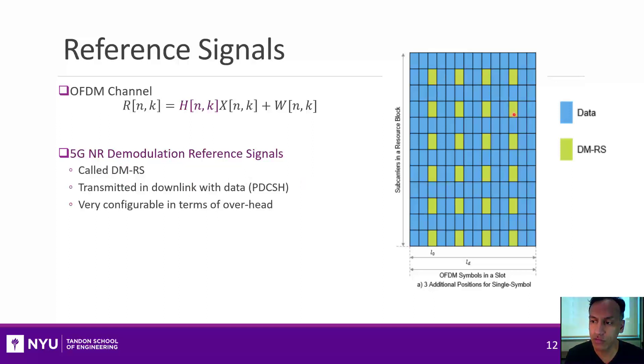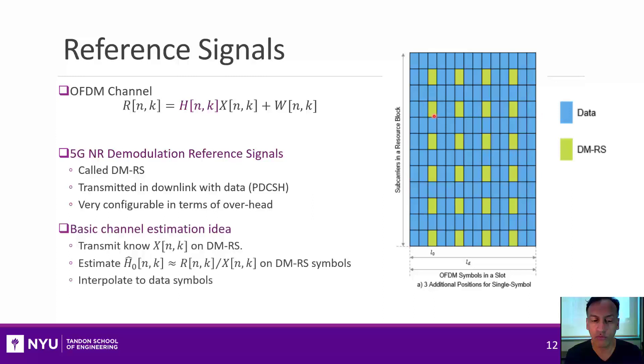And so these yellow squares are the reference signals. In this case, there are quite a few of them, there are 24 of these resource elements in this block which are reserved. So what you can do, hopefully, is that on each one of these resource elements that are reference signals, you know x of n and k. So you know x, and you also get this r, you can estimate the channel on these, and then try to interpolate to get the channel and all the other resource elements. And once you have that, you can go ahead and demodulate the data that's transmitted in there.